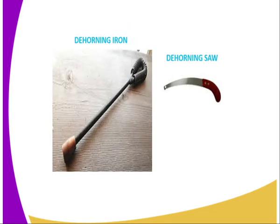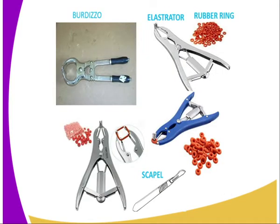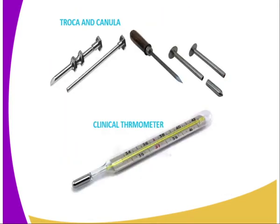Then we have the honing iron and the de-horning saw. These are the tools and equipment used when it comes to de-horning or cutting down overgrown horns. Then we have the trocar and cannula, which is used when controlling bloat — that is, excessive gas in the stomach.